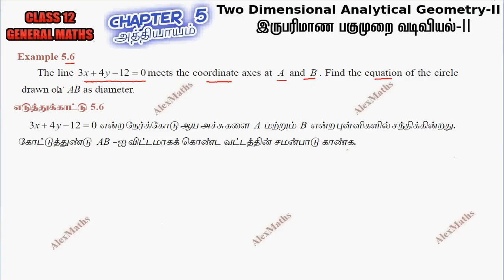Find the equation of the circle drawn on a, b as diameter. If we have given line equation, we will rearrange. So 3x plus 4y minus 12 equal to 0.